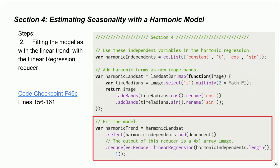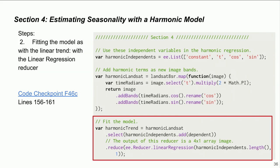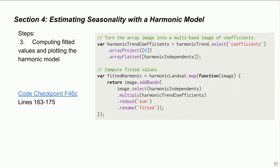To compute the fitted values, we first flatten the array image as before. Then, in the code, we fit the values and add the fitted values as a new band to each image — the same procedure as before but now with more coefficients. Finally, we plot the harmonic curve for that specific point in California.